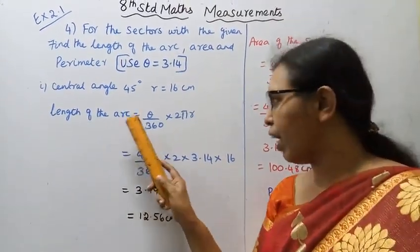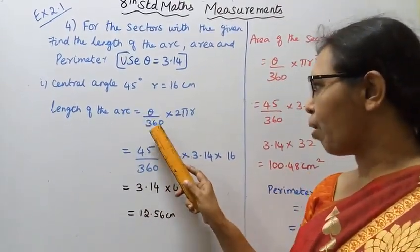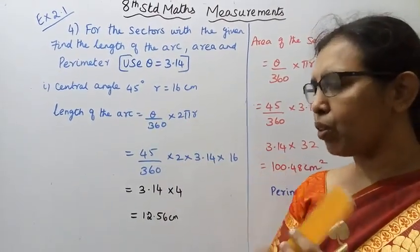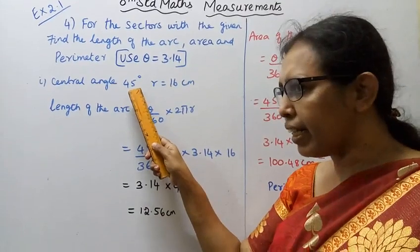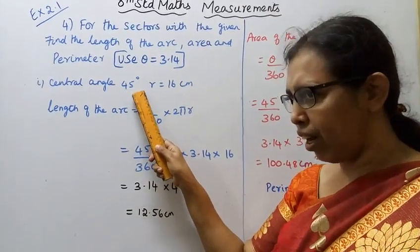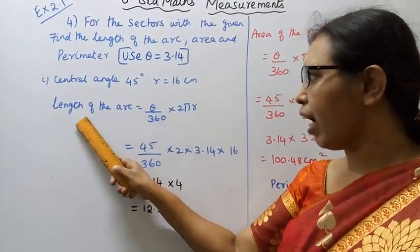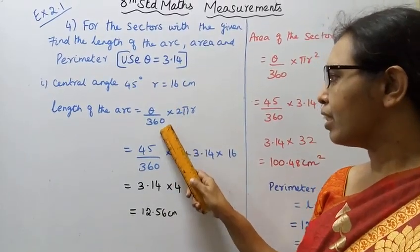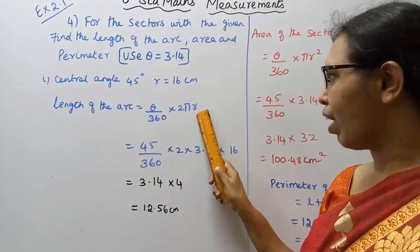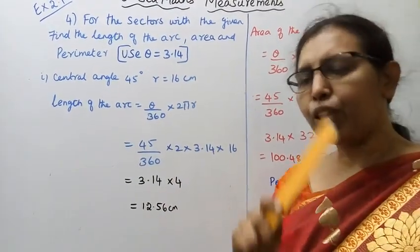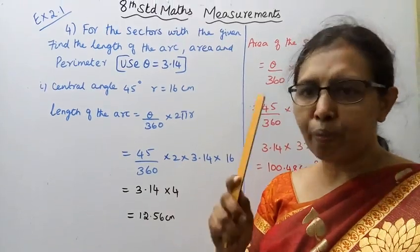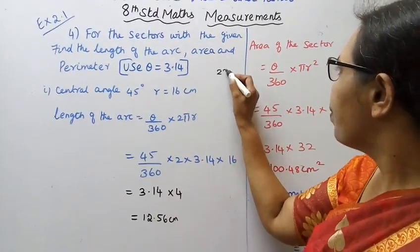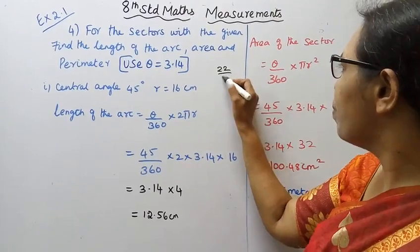The length of the arc formula is: theta by 360 into 2 pi r. Pi is 22 by 7.